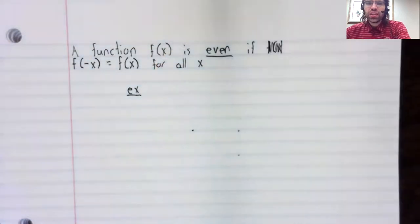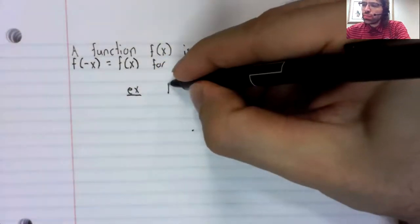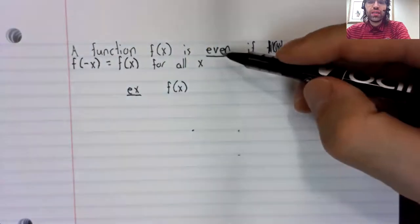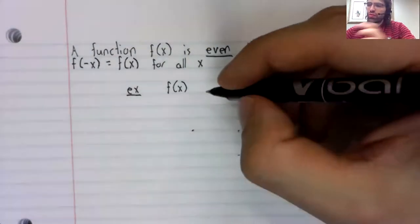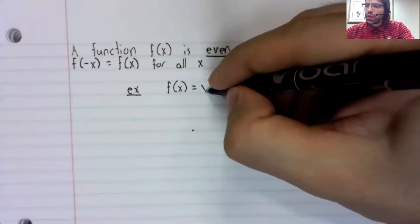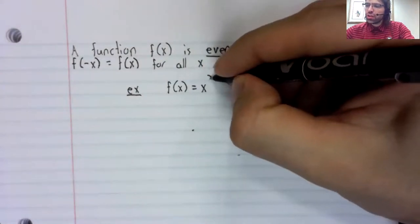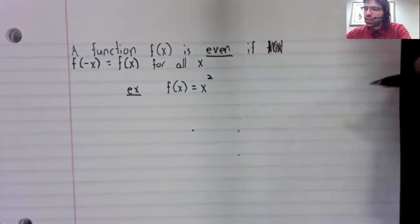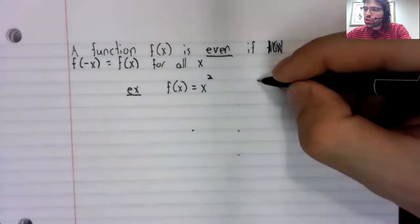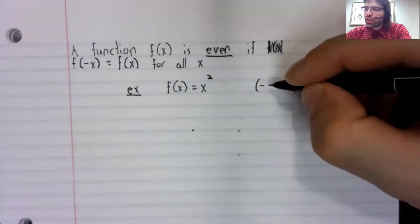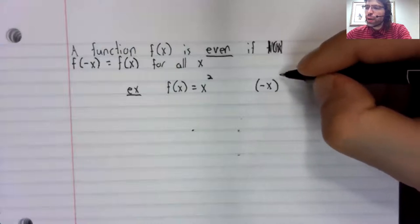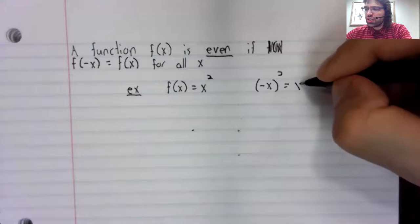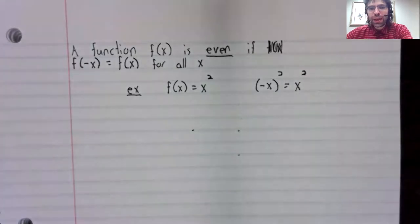As an example, and this is where the word even comes from, f(x) equals x squared is an even function. Negative x squared equals positive x squared.